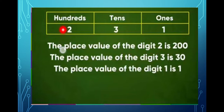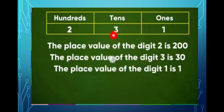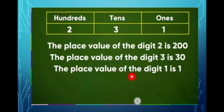So how do you read this? The place value of the digit 2 is 200 — you can write it as 200 or as two hundreds. The place value of digit 3 is three tens, which means thirty. And the place value of digit 1 is one. I hope that is clear.